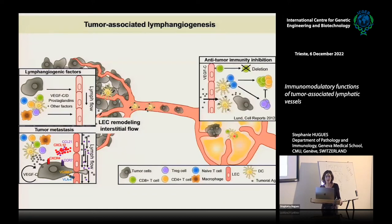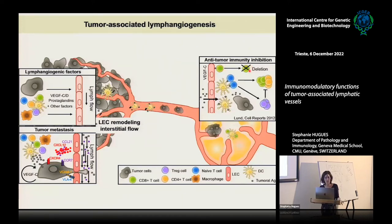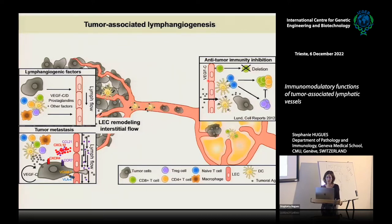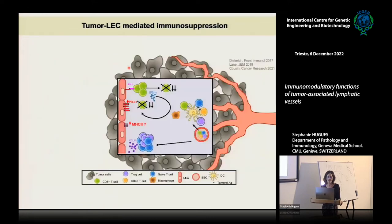We have shown several years ago that these lymphatic endothelial cells in the tumor-draining lymph node can cross-present — they can capture tumor antigens and cross-present them to anti-tumor CD8 T cells in order to induce their deletion. So in the tumor-draining lymph node, they appear to function as tolerogenic antigen-presenting cells by inducing the deletion of anti-tumor CD8 T cells. This looks to be related to their high expression of PD-L1. Now we are more interested in the lymphatic endothelial cells in the primary tumor themselves.